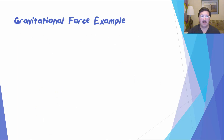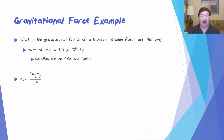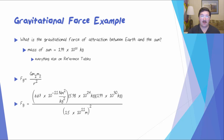Let's take a look at an example of the gravitational force. What is the gravitational force of attraction between Earth and the Sun? The mass of the Sun is 1.99 times 10 to the 30 kilograms; everything else we need is on your reference tables. Starting with the equation Fg equals G M1 M2 over R squared, the mass of the Earth is 5.98 times 10 to the 24 kilograms, and the distance between the Earth and the Sun is 1.5 times 10 to the 11 meters. Carefully doing all of that math and remembering to square the distance, the force of gravity between the Earth and the Sun is 3.5 times 10 to the 22 newtons.